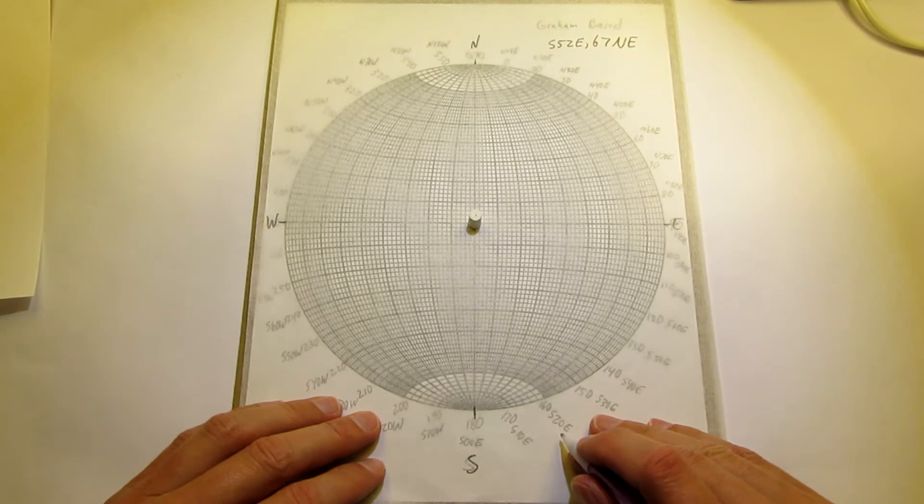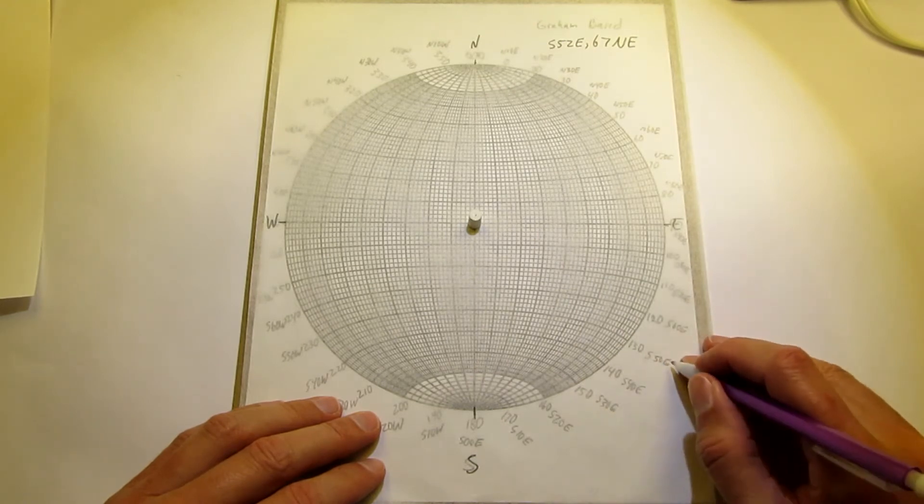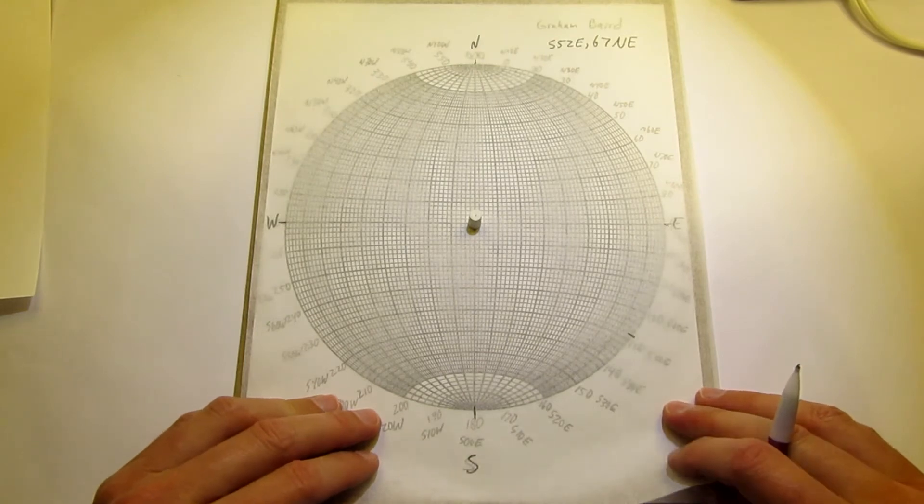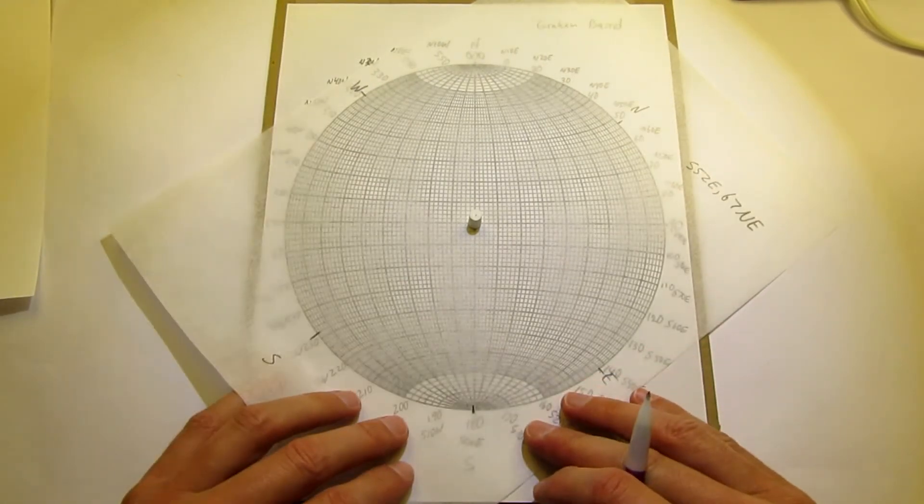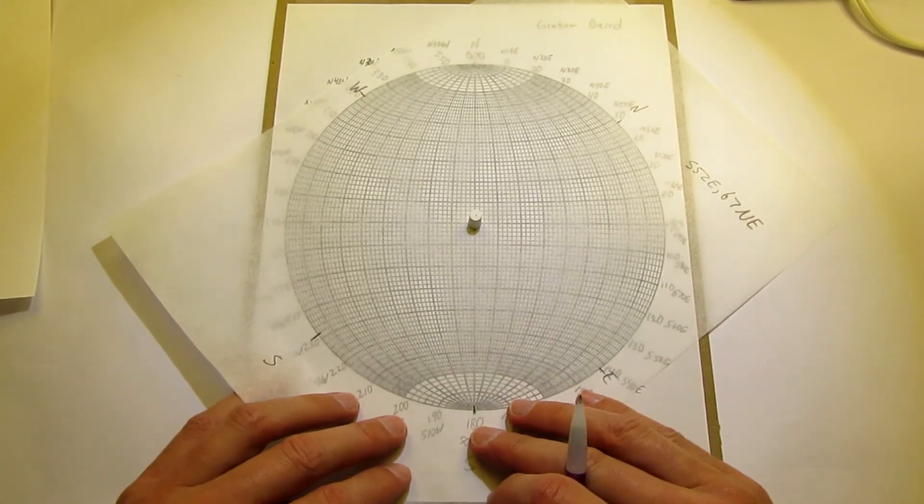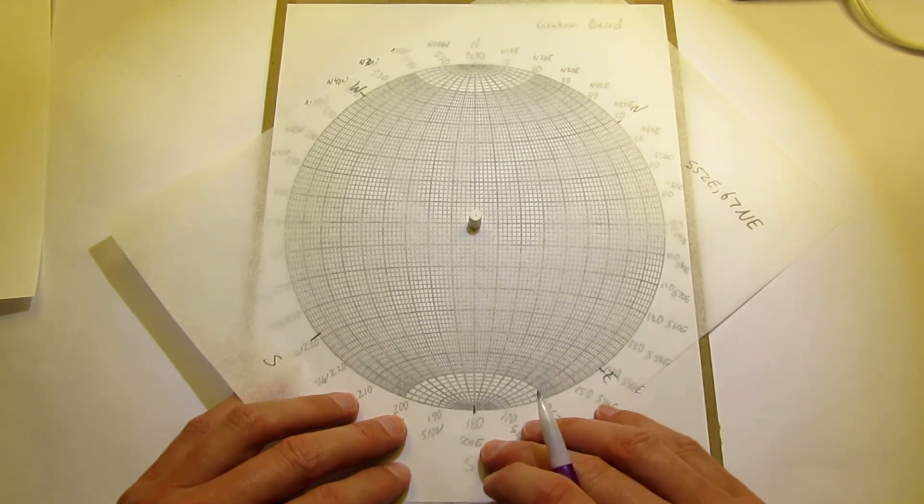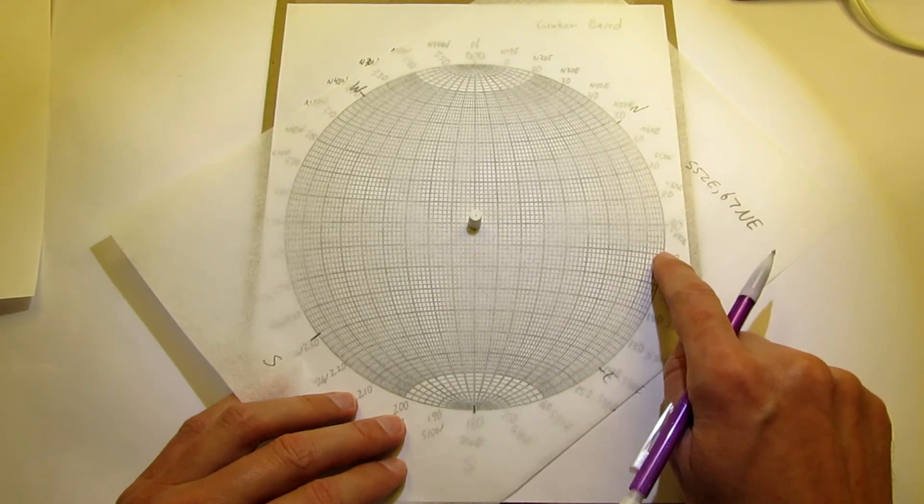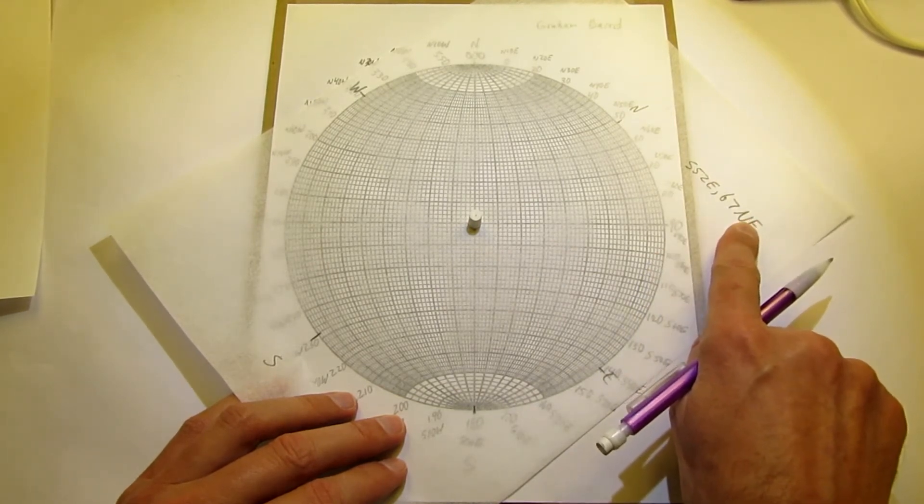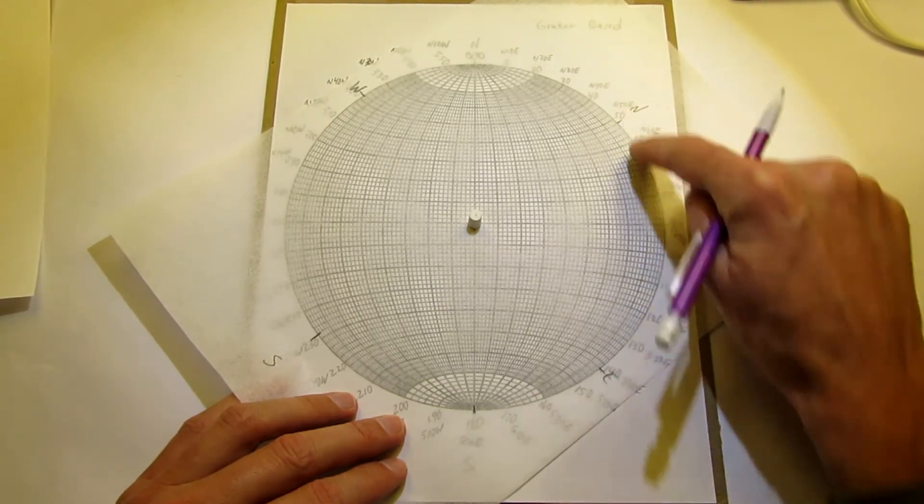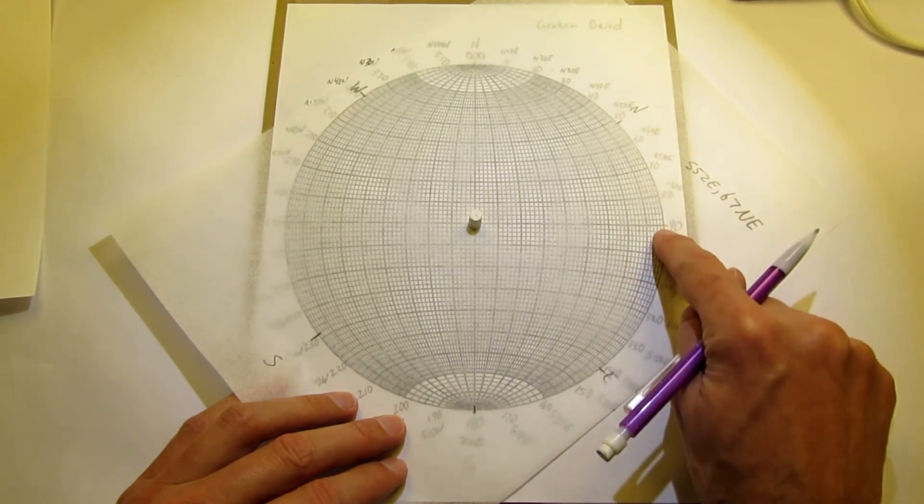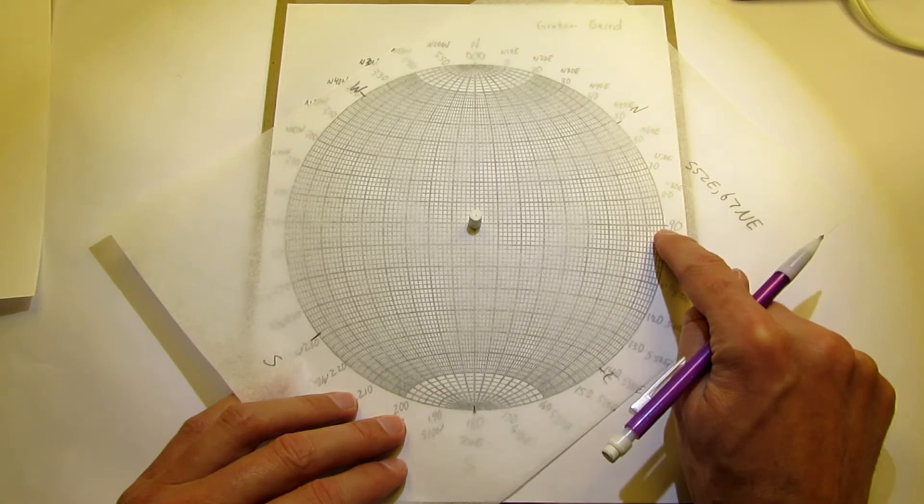So again, mark the strike, south 52 east. If you don't know, the safe bet is always go to north-south. And for doing great circles, in fact, you always have to do that. We went to south here and that's fine. But here's the key step. Dip direction is northeast. Look at northeast quadrant on the tracing paper and that tells you now which side to draw your dip from.